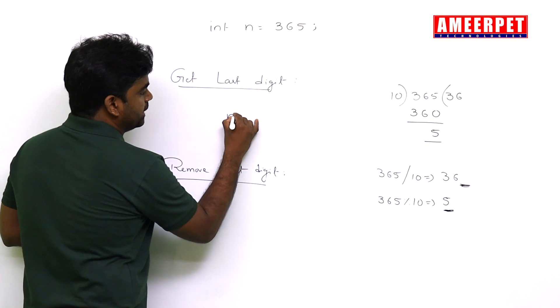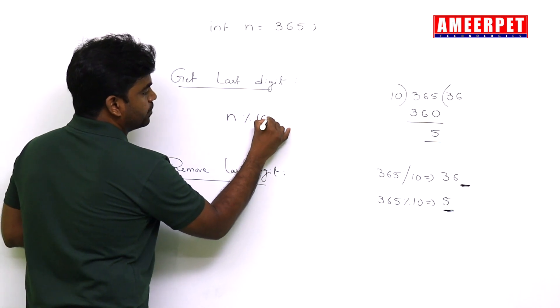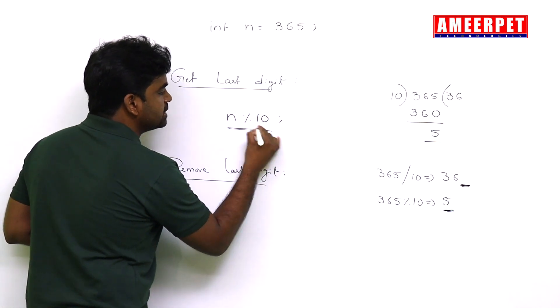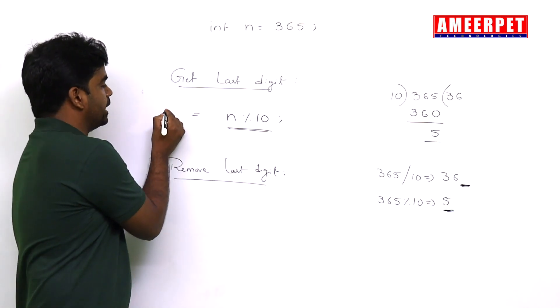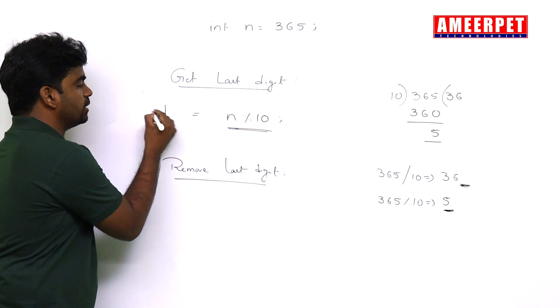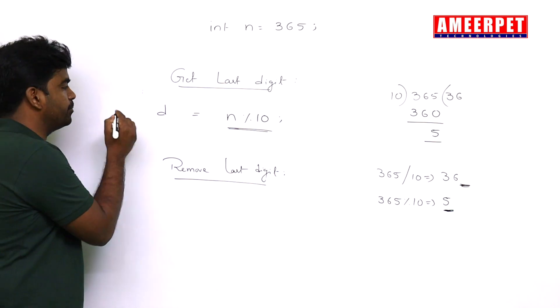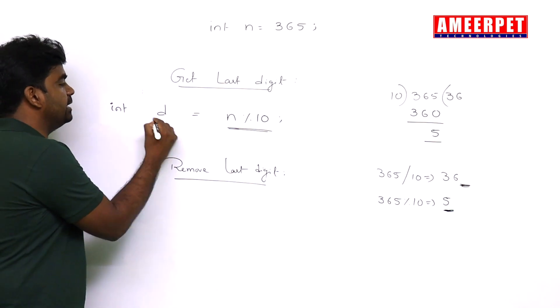So if you write n mod 10, it will give you the last digit of the given number. So that you are collecting into any variable, suppose digit or last, any variable name, and you can work with that digit.